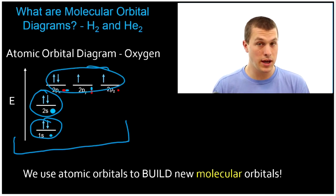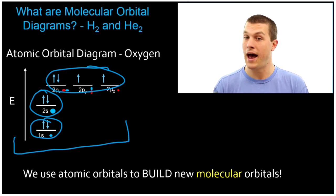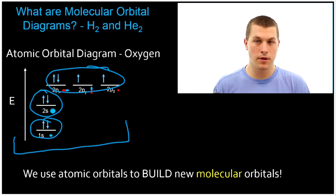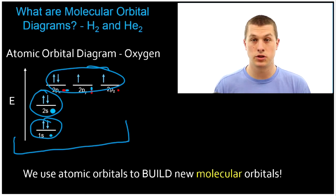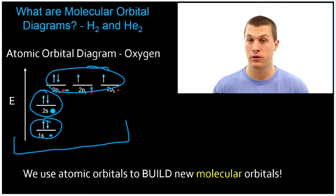Molecular orbital diagrams do very much the same thing. Instead of telling us how electrons are smeared out around an atom, they tell us how electrons are smeared out around a molecule. But of course, molecules are made up of atoms, so molecular orbital diagrams turn out to be built up from atomic orbitals, because those are the orbitals we have to work with when building up how we smear out electrons around a molecule.